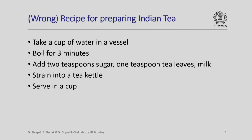Consider now the same recipe for preparing Indian tea, where the steps are exchanged. Take a cup of water in a vessel, boil for three minutes, add two teaspoons sugar, one teaspoon tea leaves, milk, strain into a tea kettle and serve in a cup. Note that the steps are the same as the previous recipe, except that two steps have been interchanged. The question is: will I get the right kind of Indian tea?